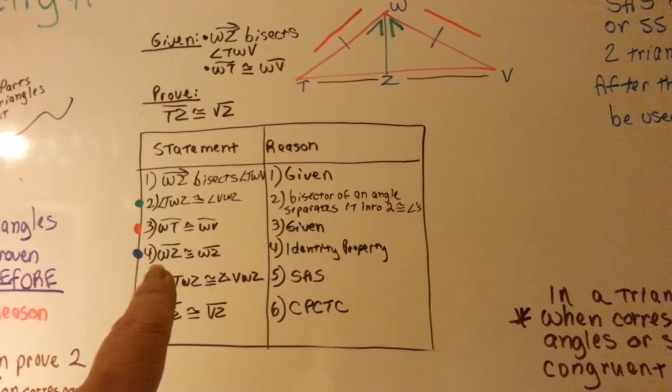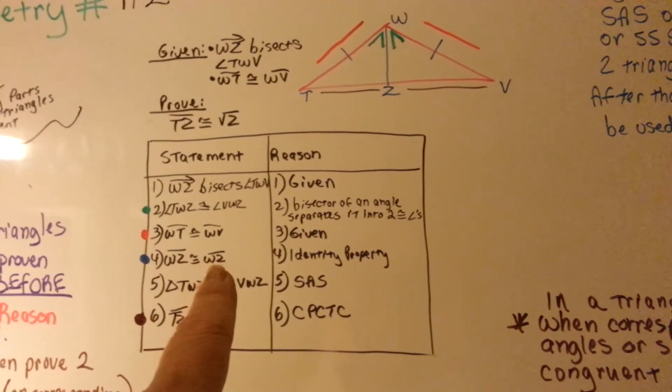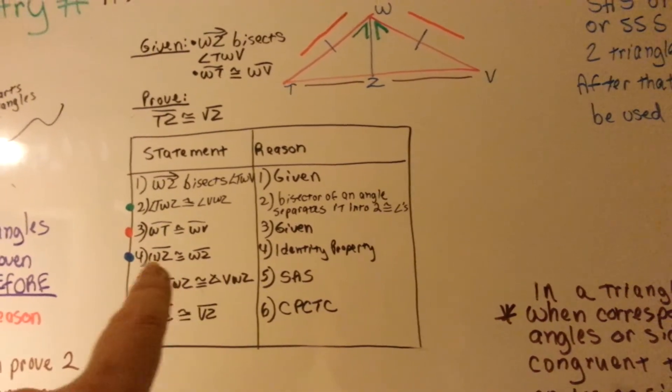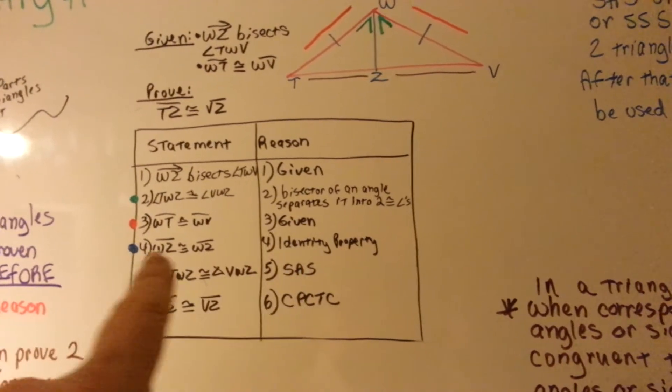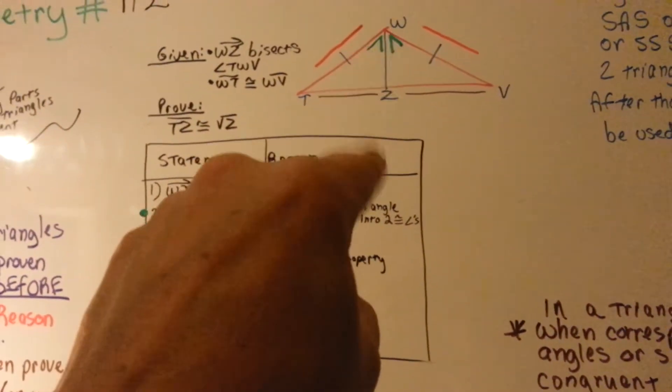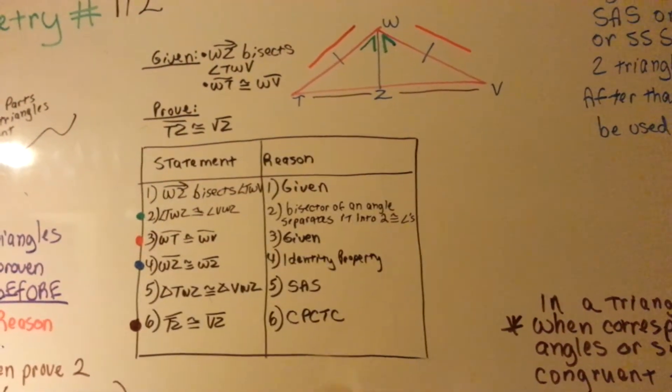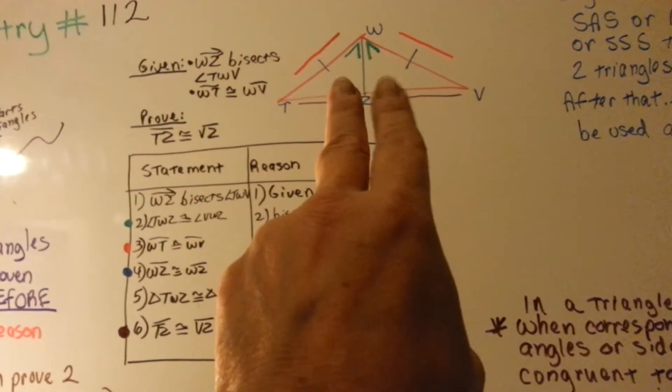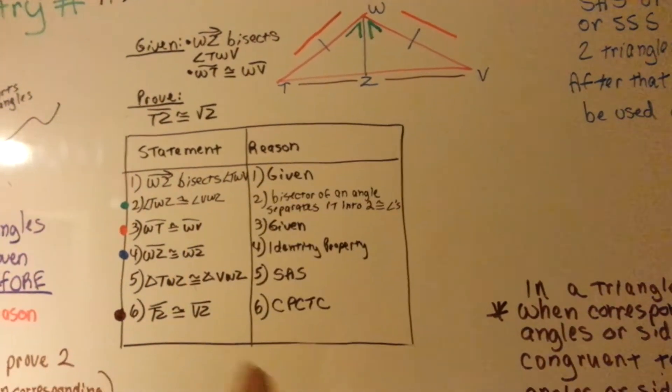Now, the blue ones. WZ is congruent to WZ. That's the reflexive property. The identity one that says it's congruent to itself. That line is congruent to itself because there are two triangles, but they're sharing that line.